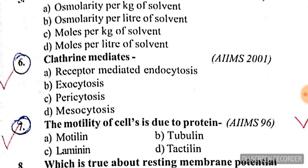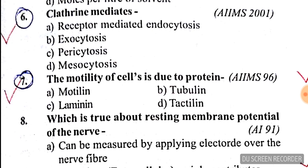Question number 6: clathrin mediates — see all four options carefully. The answer is receptor-mediated endocytosis. Sixth answer is A. Question number 7: the motility of cells is due to the protein — the answer is B, tubulin.